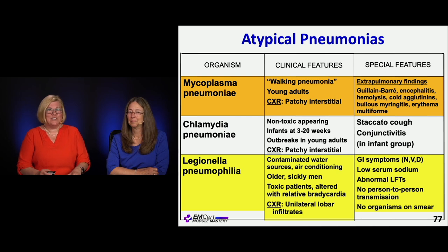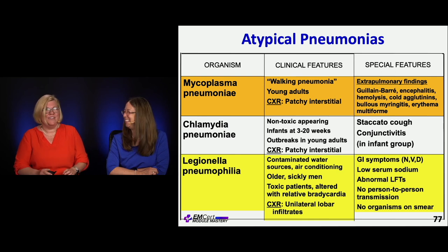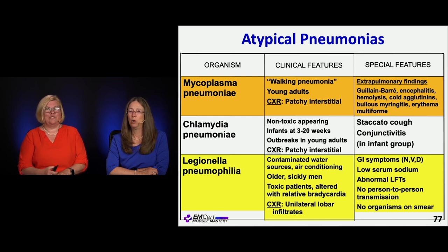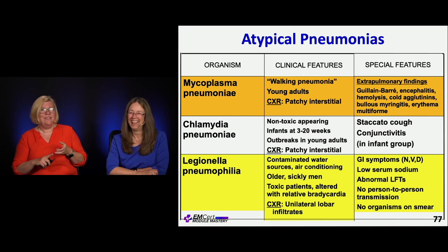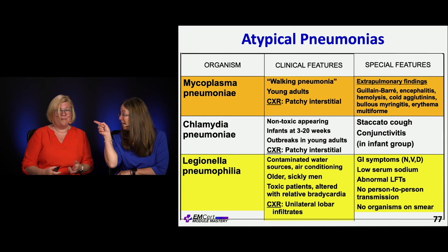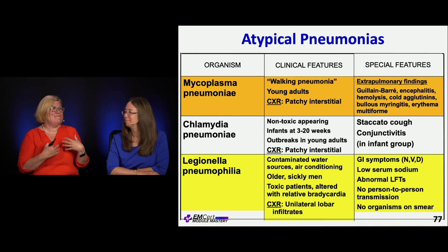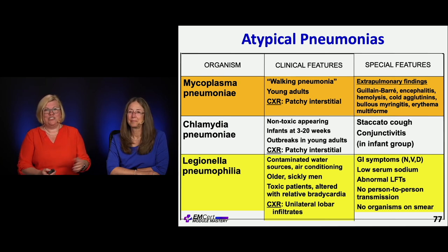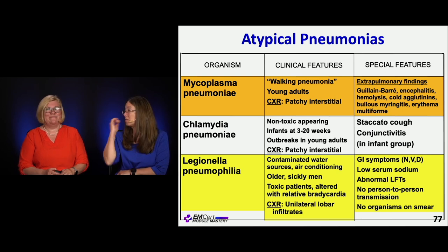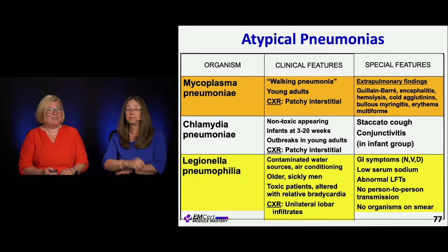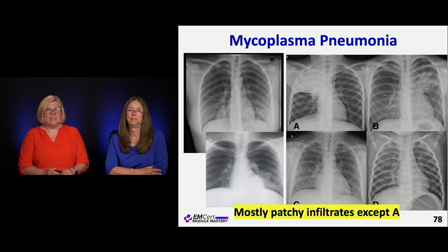Legionella is another category. This is the older male at a VA convention, at a hotel with contaminated air conditioning in the summer. They get a lobar infiltrate. Older, sicker men — they have a low sodium and often GI symptoms, which is key. It doesn't get transmitted person-to-person; it comes from a contaminated water source. And it doesn't show up on a smear — you have to specifically think about it and test for it.